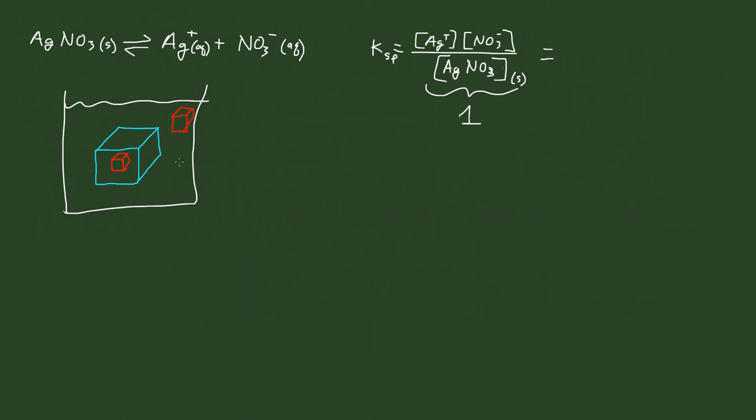So anything divided by one is that anything, so therefore, the Ksp, the solubility product constant, which is going to govern how much is going to dissolve in, for example, pure water, is going to be just the products.